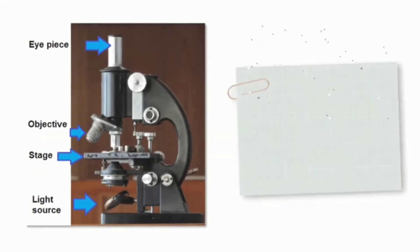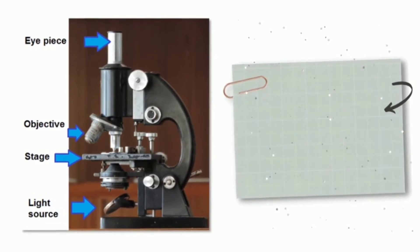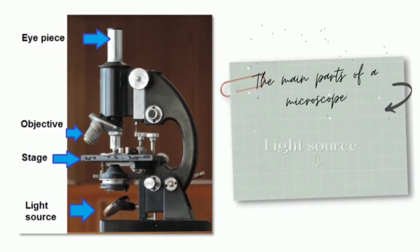With all these materials we are going to make the main parts of a microscope. As a light source we will use a flashlight, as stage we will use a glass jar, and as the objective and the eyepiece a drop of water.